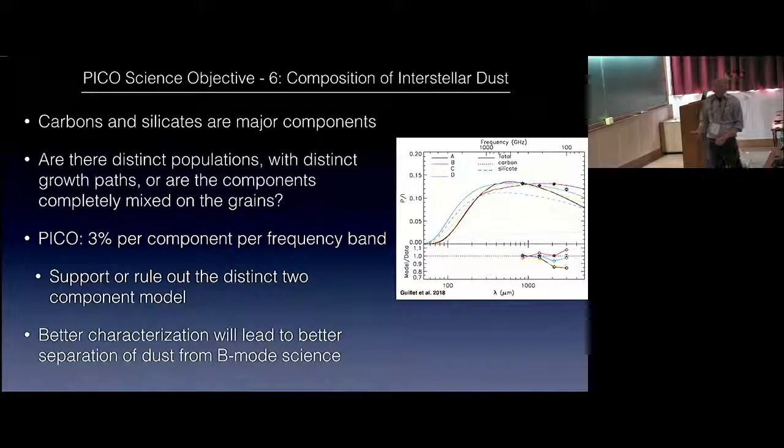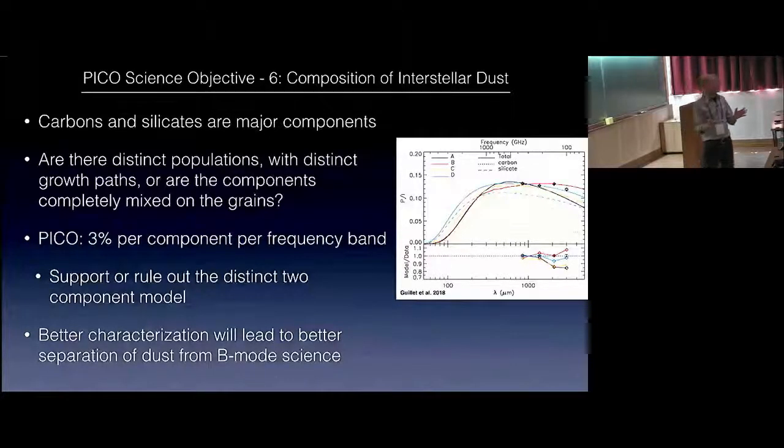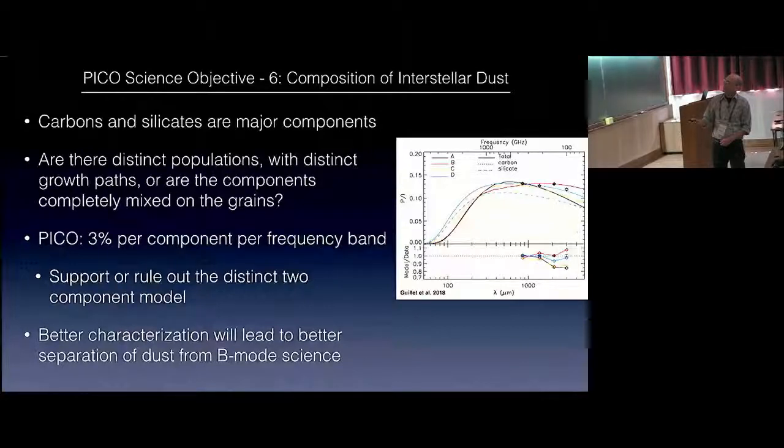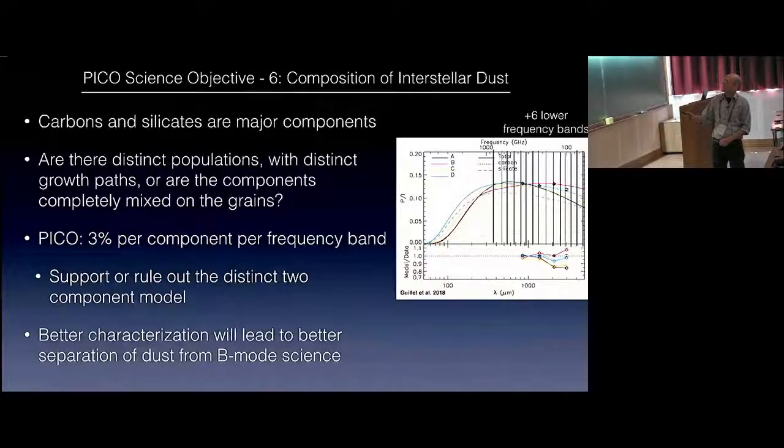Pico will constrain the makeup of dust. Is dust made mostly of carbon, separate population of carbon or separate population of silicates or are they combined together? Pico should have, so these are current Planck constraints on the polarization fraction as a function of frequency. Different dust models, these are carbon, these are silicates, these are the total for different models. And so with 21 bands between here and six lower frequency bands that I can't fit in, and 3% per component per frequency band, we should be able to figure out exactly what is the makeup of galactic dust. This will also give better characterization for B-mode science.